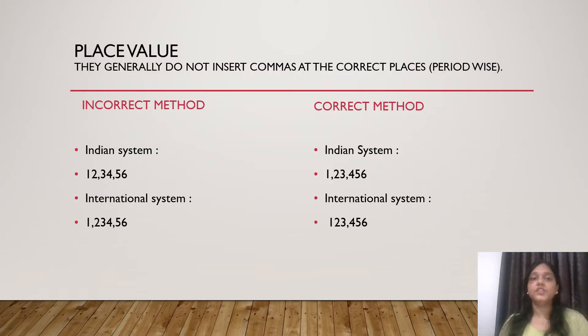Let us begin with Chapter 1 Place Value. In place value children forget to insert commas according to Indian and international system. As we know that the main difference between Indian and international system is placement of the commas. In Indian system we use lakhs after thousand and in international system we use million after thousand. So while inserting the commas children need to learn both the tables of Indian and international system as well.